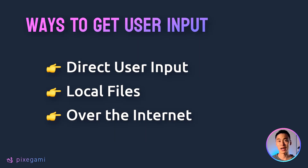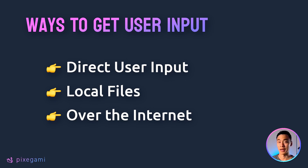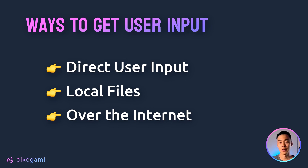The reason we write Python code is so we can do useful things for people. But that means we're going to need a way to get input data from the world somehow. That could be through direct input, like somebody typing something into a console, or it could be from a local file, like an Excel file or a PDF file, or it could even be over the internet — a Python app that communicates with other apps all over the internet.